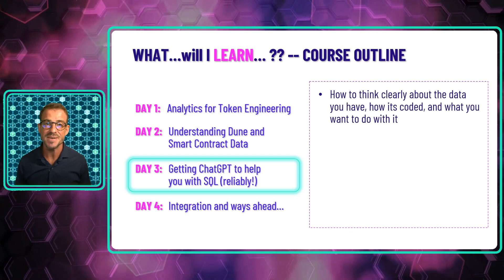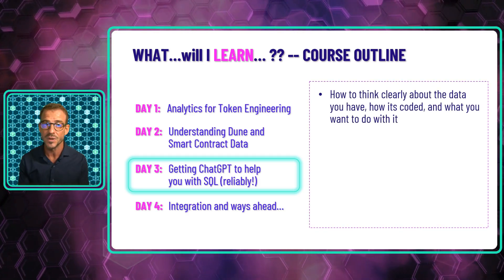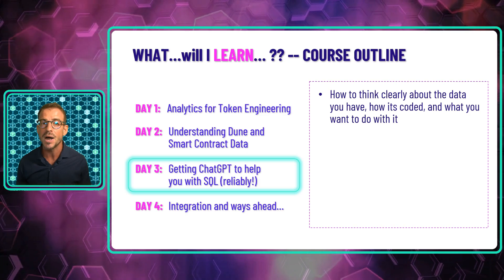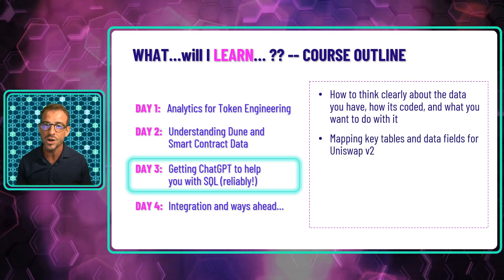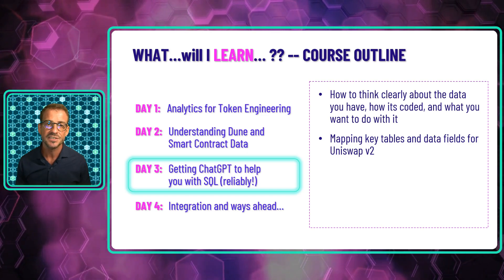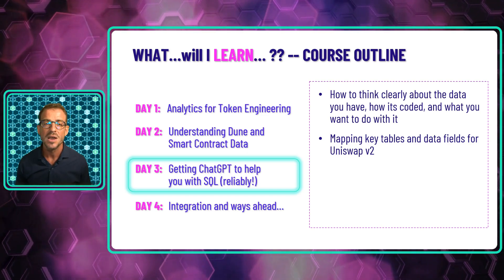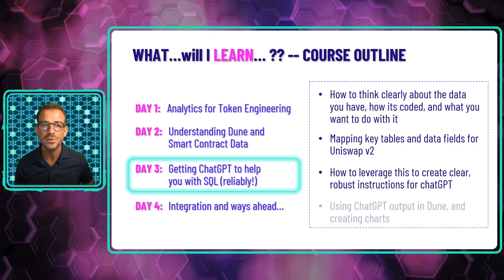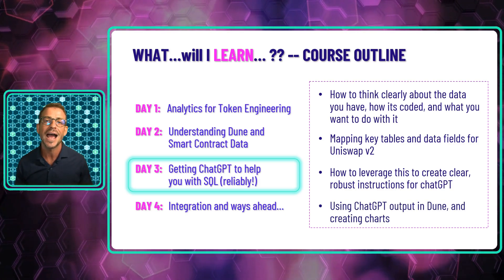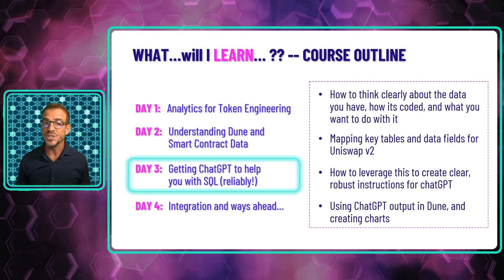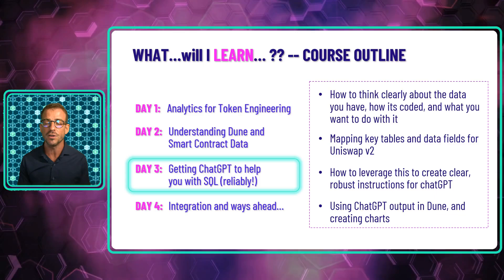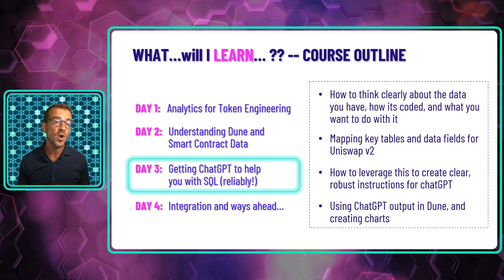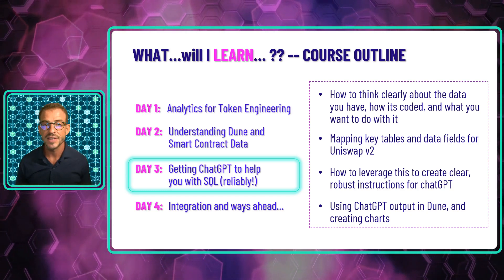Day three is all going to be about getting ChatGPT to help you with your SQL reliably. We'll learn how to think clearly about the data that we have, how it's coded, and what we want to do with it. We'll begin by identifying the key tables we're interested in working with and how to map their data fields so we can think about what we do with these data. We'll then leverage all of that to create clear, robust instructions for ChatGPT, use ChatGPT's output in Dune, and learn how to transform that into visual charts. At the end of day three, you'll be invited to put these skills to the test by yourself to generate charts and tables on Dune and submit them for assessment. If you do this correctly, you will earn your own NFT certifying your new skills and achievement.